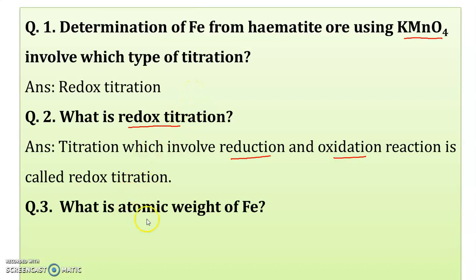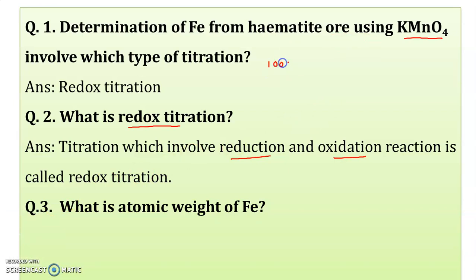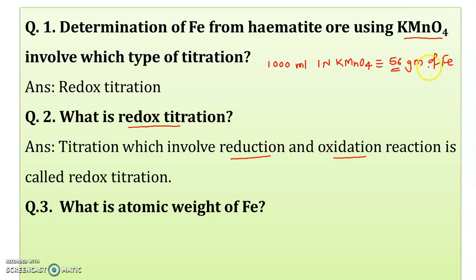Next question: what is the atomic weight of Fe? When you are going to do the calculation of the determination of percentage of Fe, we write one standard relation: 1000 mL of one normal potassium permanganate is equivalent to 56 grams of Fe. That value comes from the atomic weight of Fe as determined from the periodic table. So it is 56 grams.